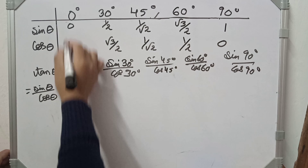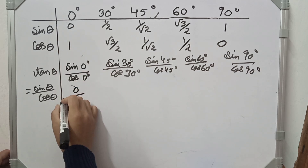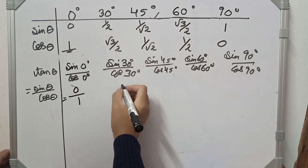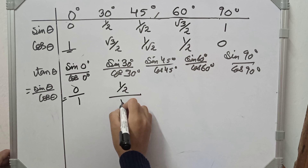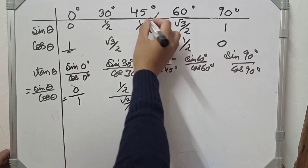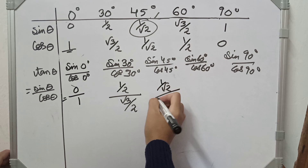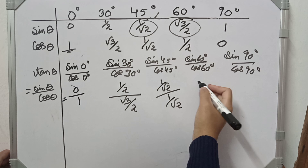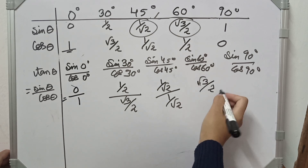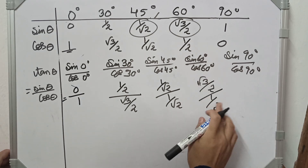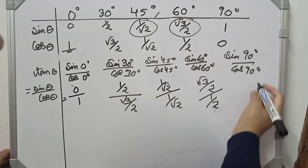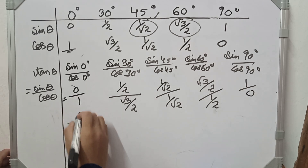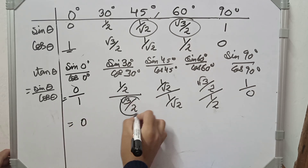sin 0° is 0 by 1, cos 0° is 1. sin 30° is 1/2, cos 30° is √3/2. sin 45° is 1/√2, cos 45° is 1/√2. sin 60° is √3/2, cos 60° is 1/2. sin 90° is 1, cos 90° is 0.